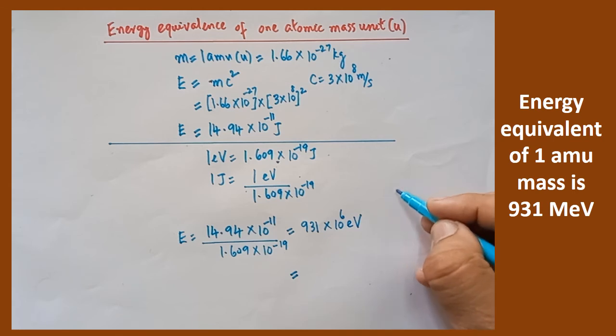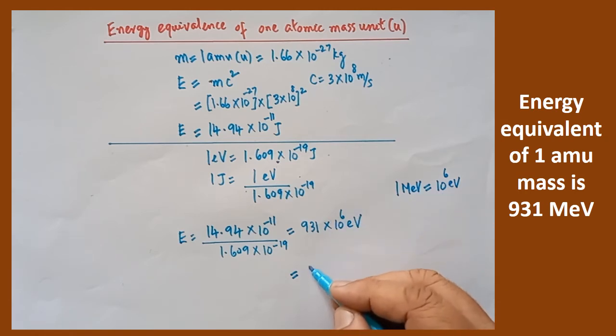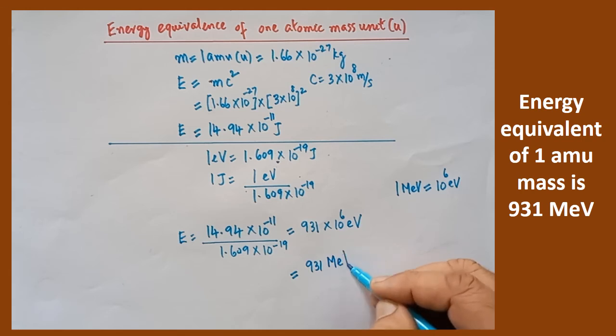We know very well that 1 million, million means 10 to the power of 6, 1 million electron volt is equivalent to 10 to the power of 6 electron volt. So this entire factor can be replaced by million electron volt. So 931 million electron volt is the answer. This is the answer obtained in terms of energy.